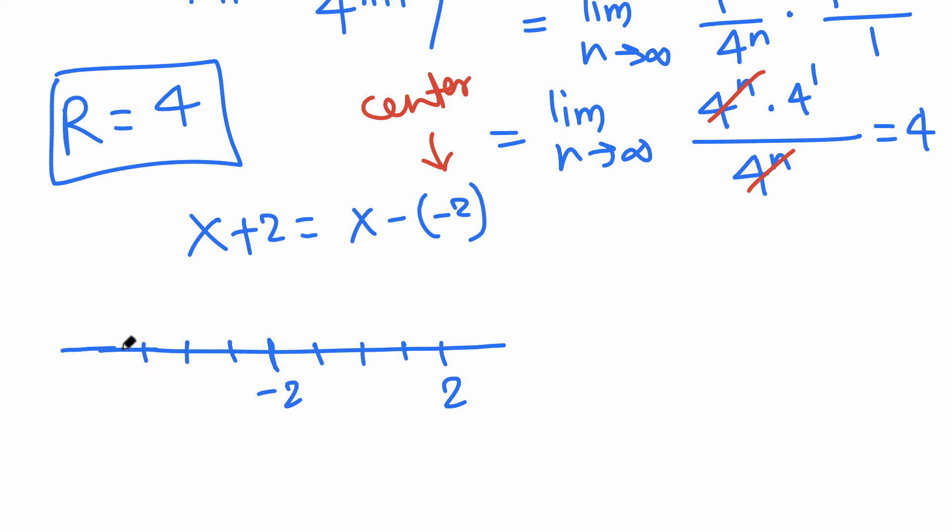And here, 4 units to the left: -3, -4, -5, -6. So 4 units to the left, 4 units to the right. The open interval is (-6, 2) - that's the answer.